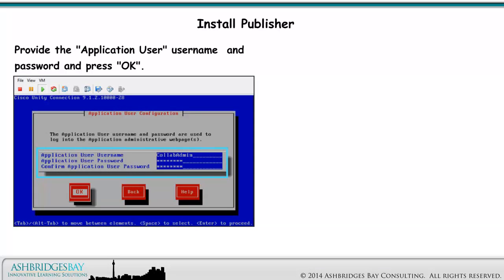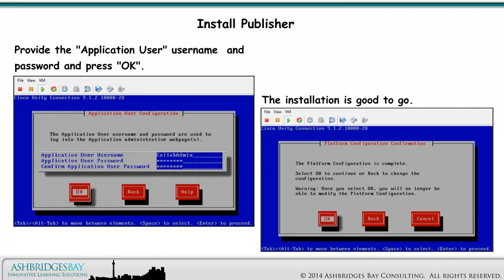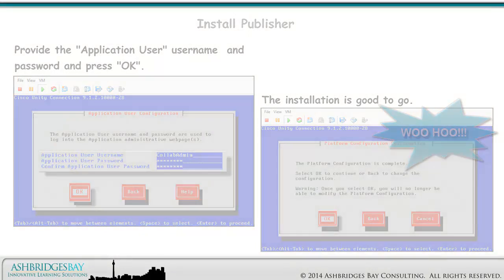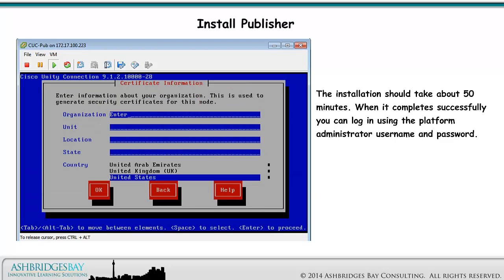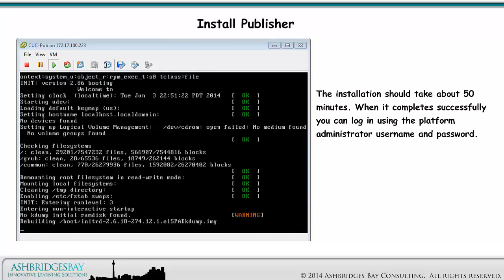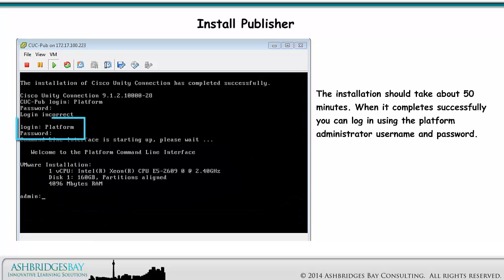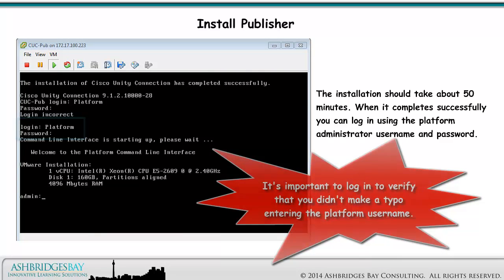Provide the application user username and password and press OK. The application user has access to the Cisco Unity Connection Administration, Cisco Unity Connection Serviceability, Cisco Unified Serviceability, and reporting web pages. The installation is good to go and should take about 50 minutes. When it completes successfully, you can log in using the platform administrator username and password. It's important to log in to verify that you didn't make a typo entering the platform administrator username.